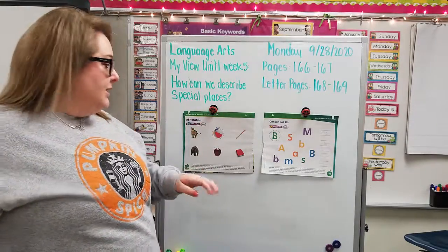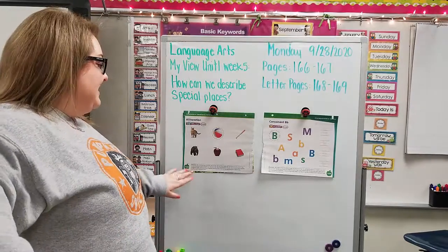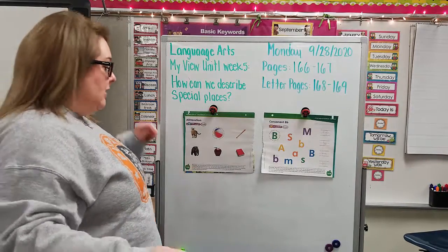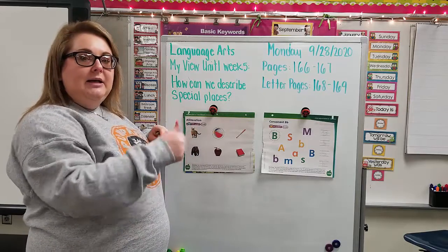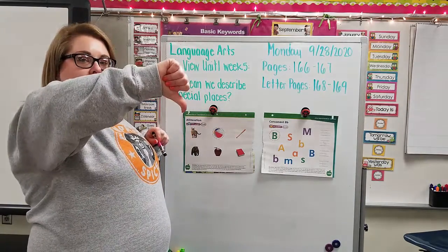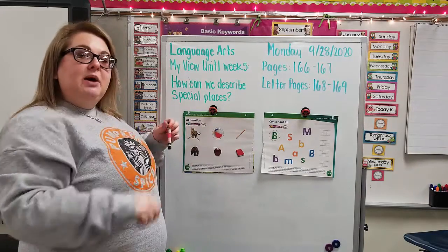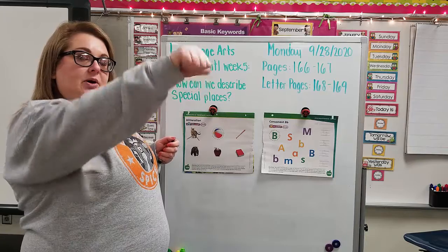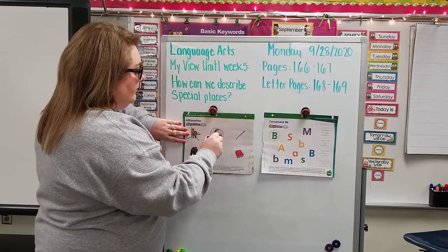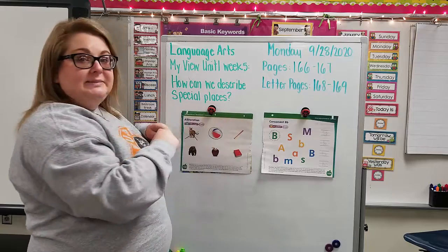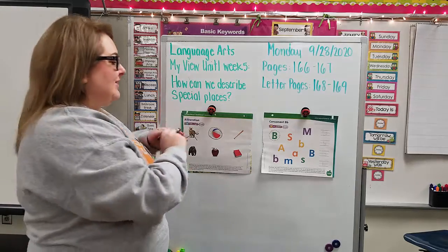Now let's look at the B sounds. If it's a B sound, we're going to draw a circle around it, and if it is not, we're going to cross it out. Does 'cat' say B? Thumbs up or thumbs down? Thumbs down — cross it out. How about 'beach ball'? Does beach ball begin with B? Thumbs up! Go ahead and circle it. How about 'bat' or 'baseball bat'? Thumbs up — go ahead and circle it.